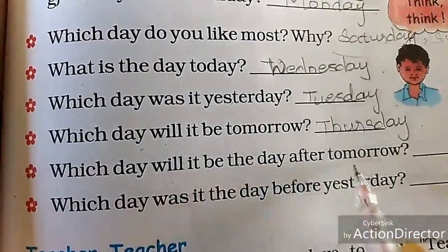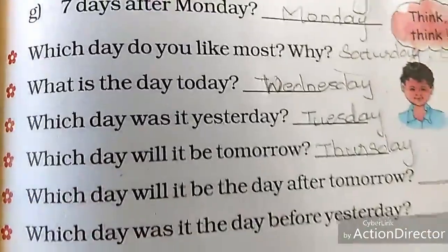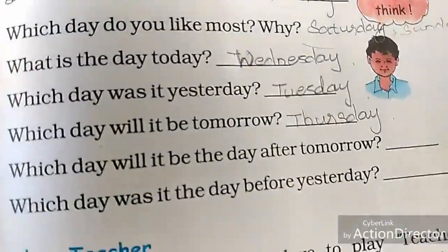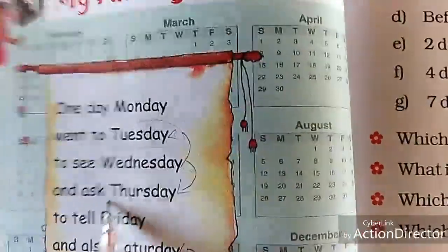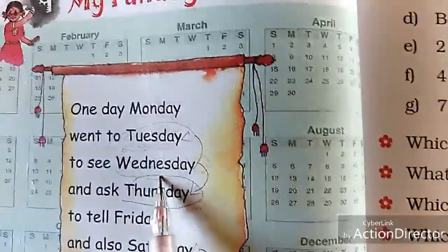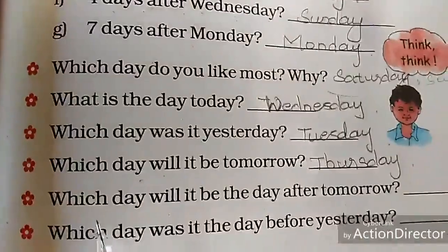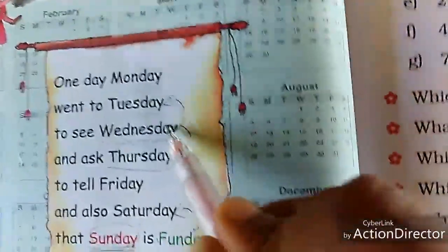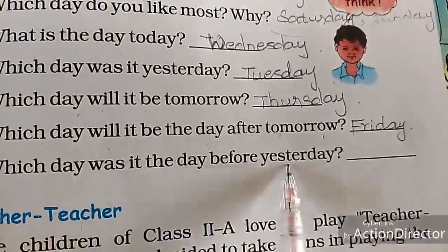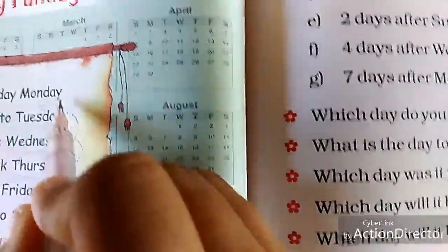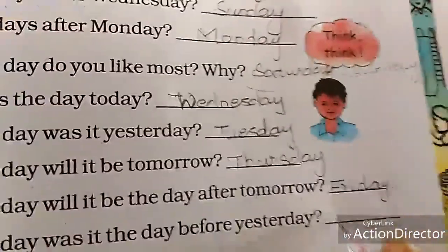Which day will it be the day after tomorrow? Today is Wednesday. Tomorrow means Thursday — the day after tomorrow is Friday. You have to skip one day. Which day was it the day before yesterday? Before you skip one day — Wednesday, so the day before yesterday is Monday. Here you write Monday.